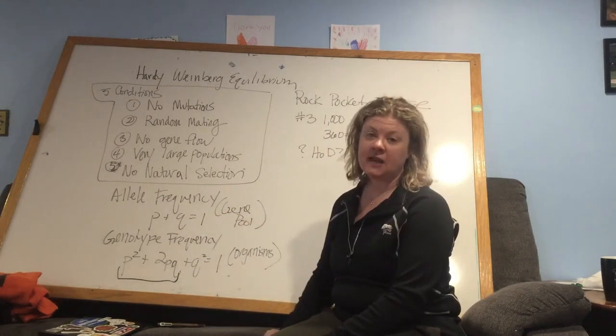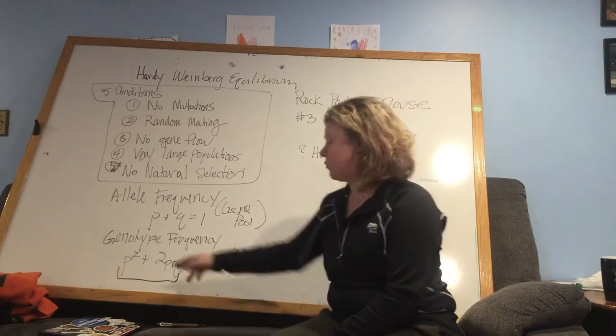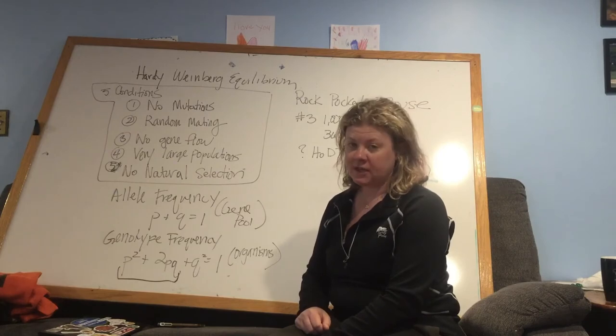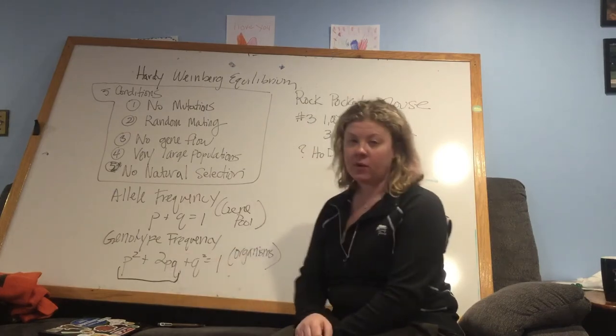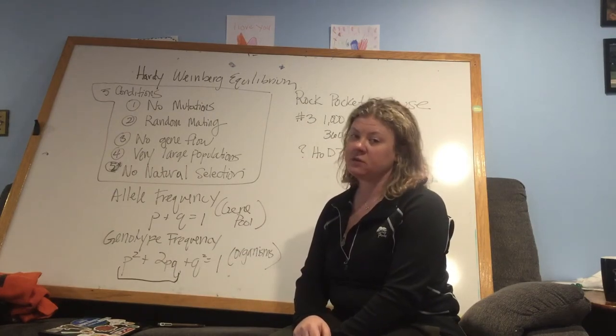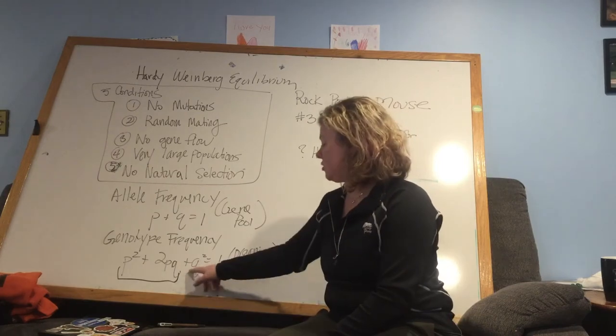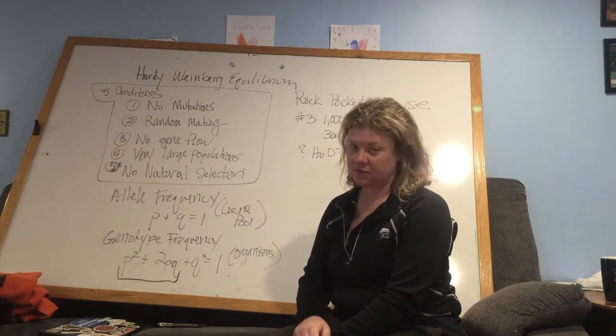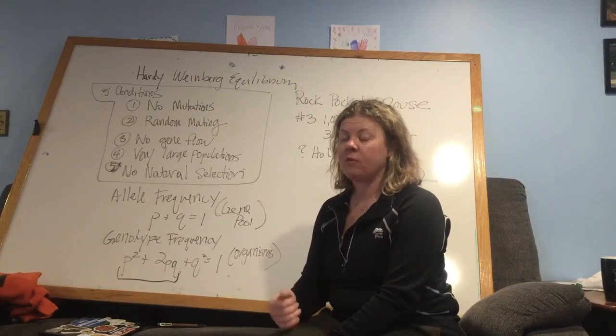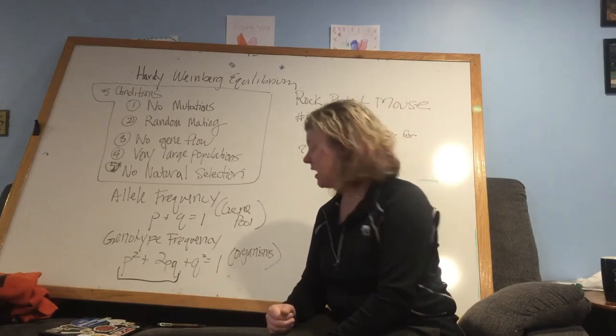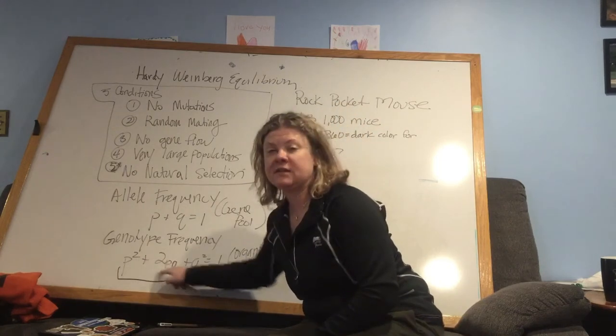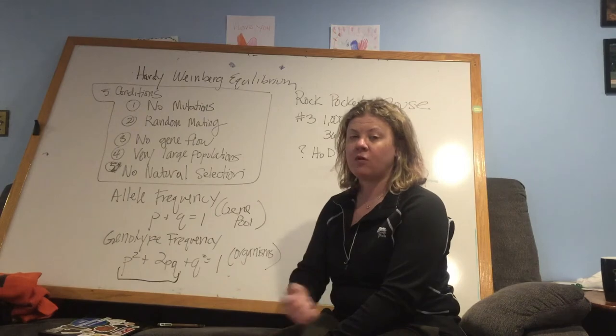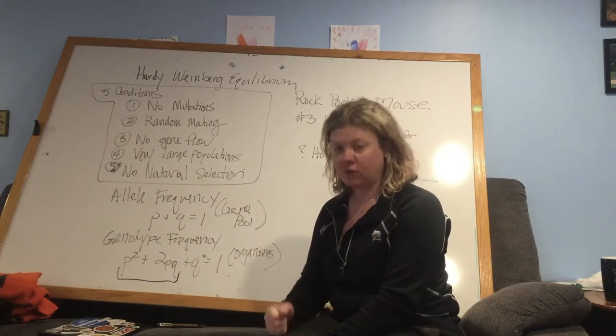Genotype frequency is now talking about the individuals. So P squared is going to represent the fraction of individuals that are homozygous dominant. 2PQ is going to represent the fraction of individuals that are heterozygous. And Q squared is going to represent the fraction of individuals that are homozygous recessive. Remember that if they give you homozygous phenotype information, that is including both of these types of individuals. So you can't separate them unless you know that Q allele value first.